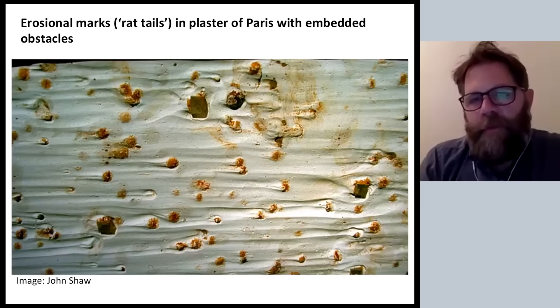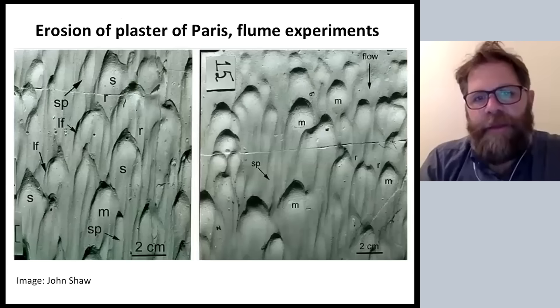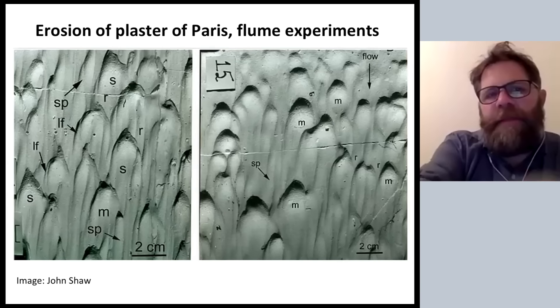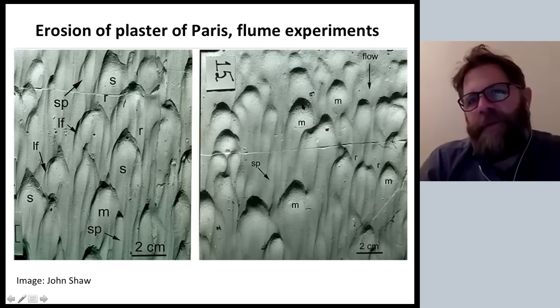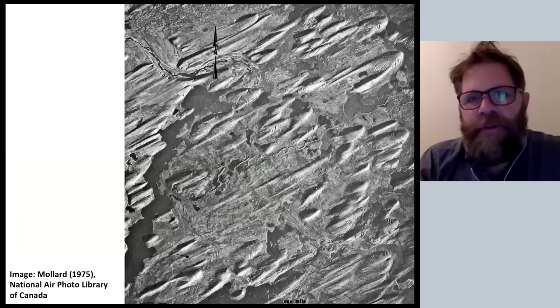We saw this diagram earlier — those form-process analogies and connections were present in the development of this idea. There was more work done on plaster of paris. These are negative forms, but you can recognize that in the plaster of paris we've excavated forms that can be both elongate or very broad — some elongate forms, some wide broad ones — and those forms are remarkably similar to some of the ones you see on the landscape.